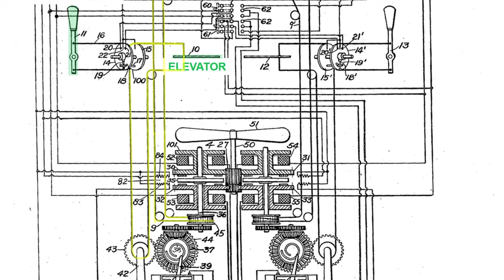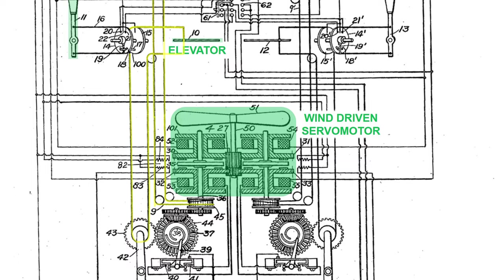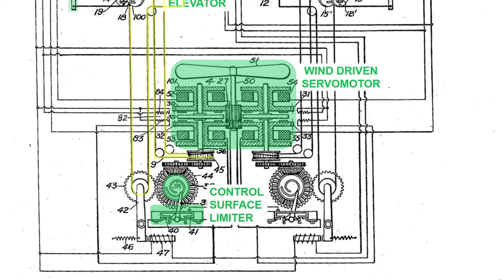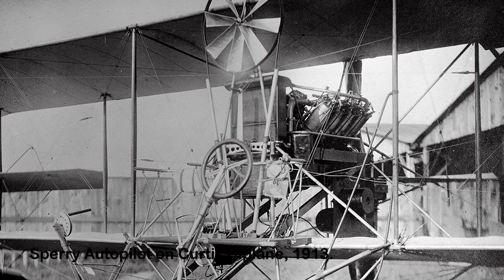The servo motor is wind-powered. It's comprised of counter-rotating gear sets and clutch plates that engage to change the direction of flap motion depending on gyroscope feedback. There's even a control surface limiter that halts control action to avoid overcompensation. Note the prominent wind drive of this Sperry autopilot as implemented on this Curtis biplane.